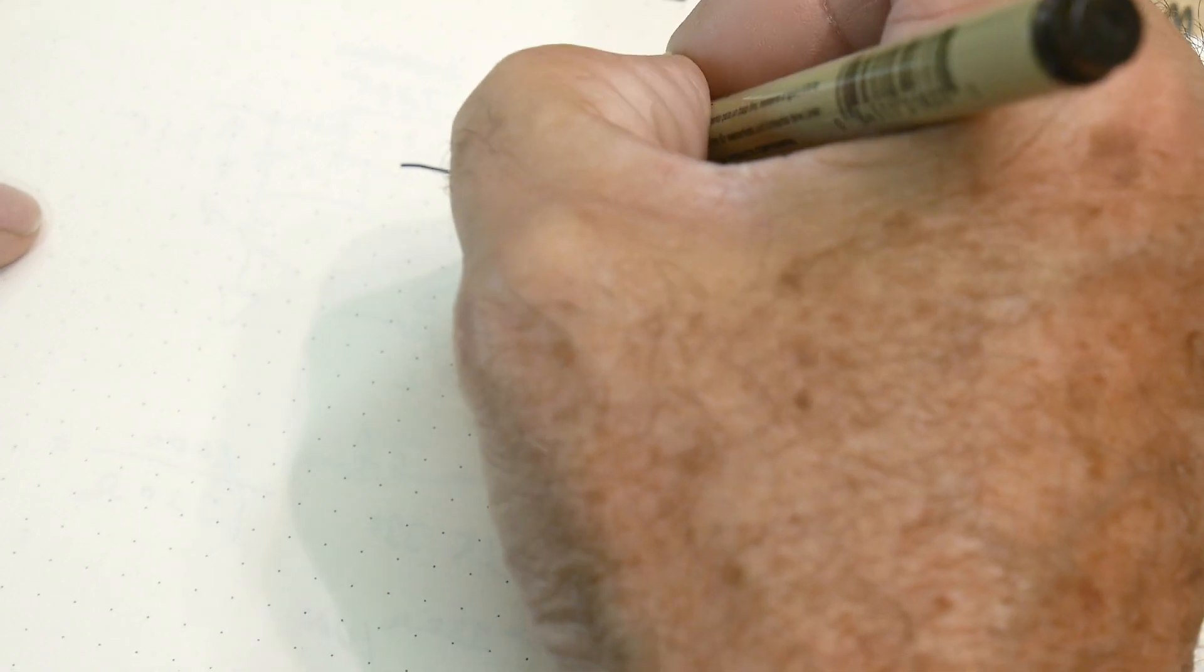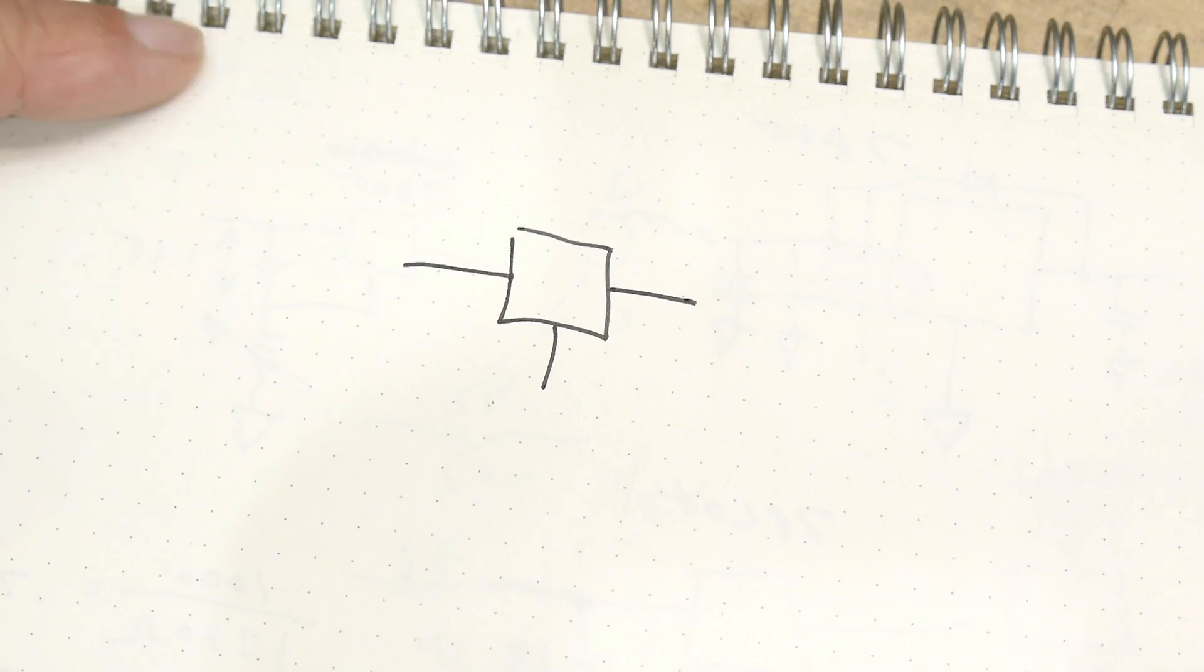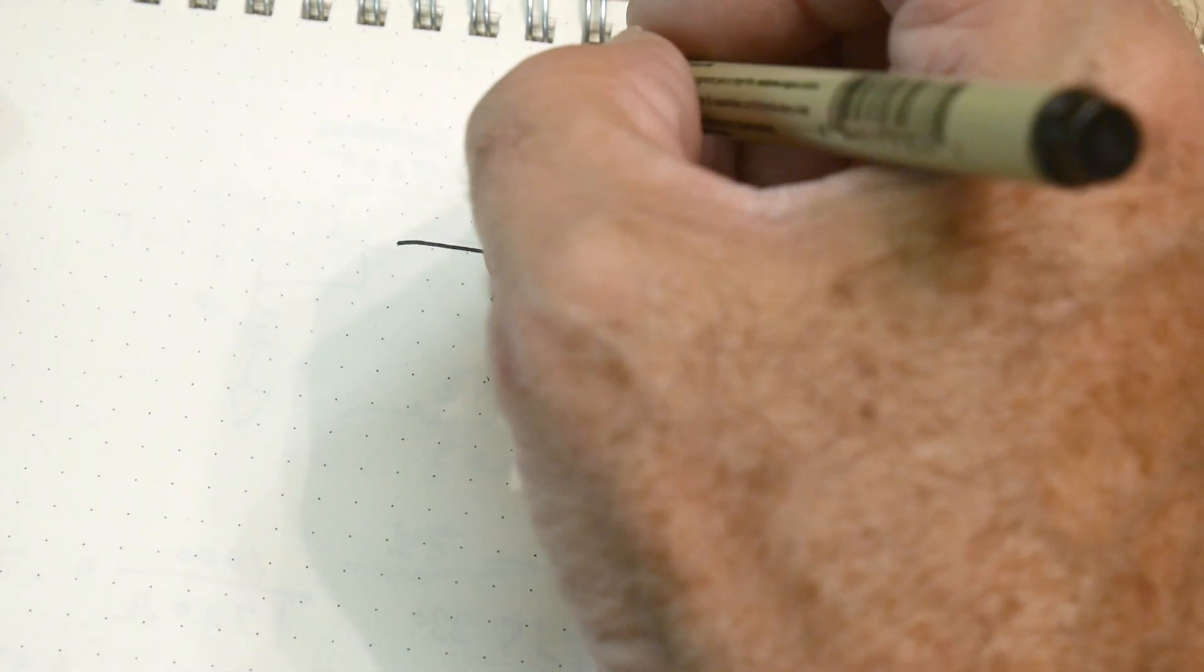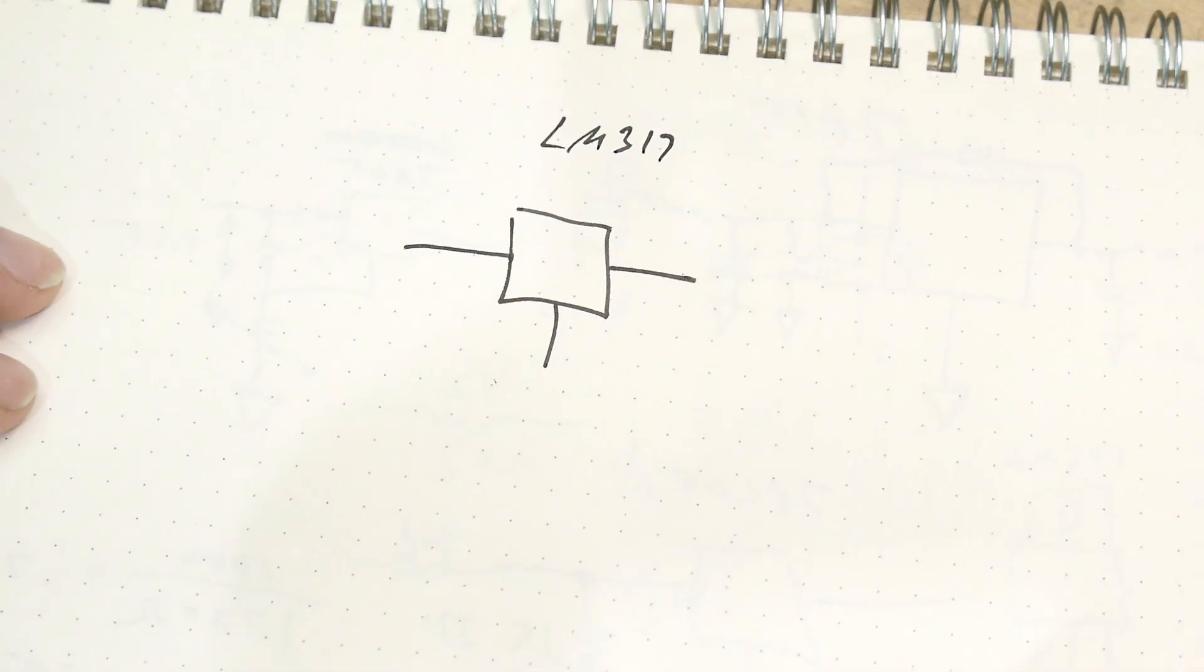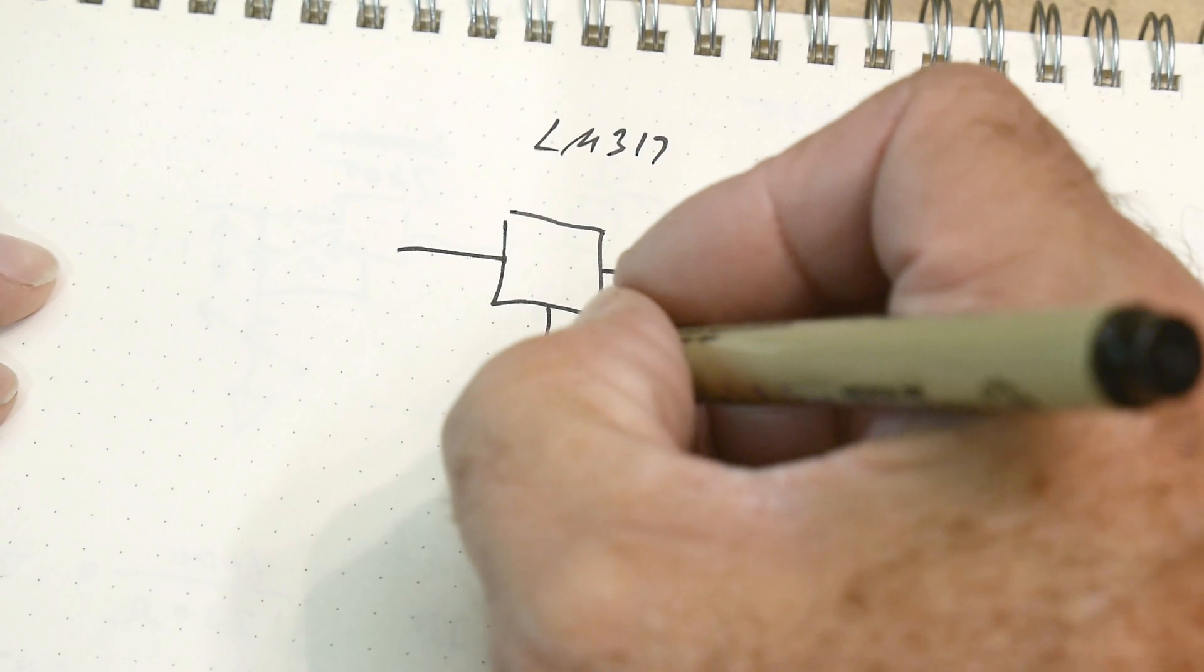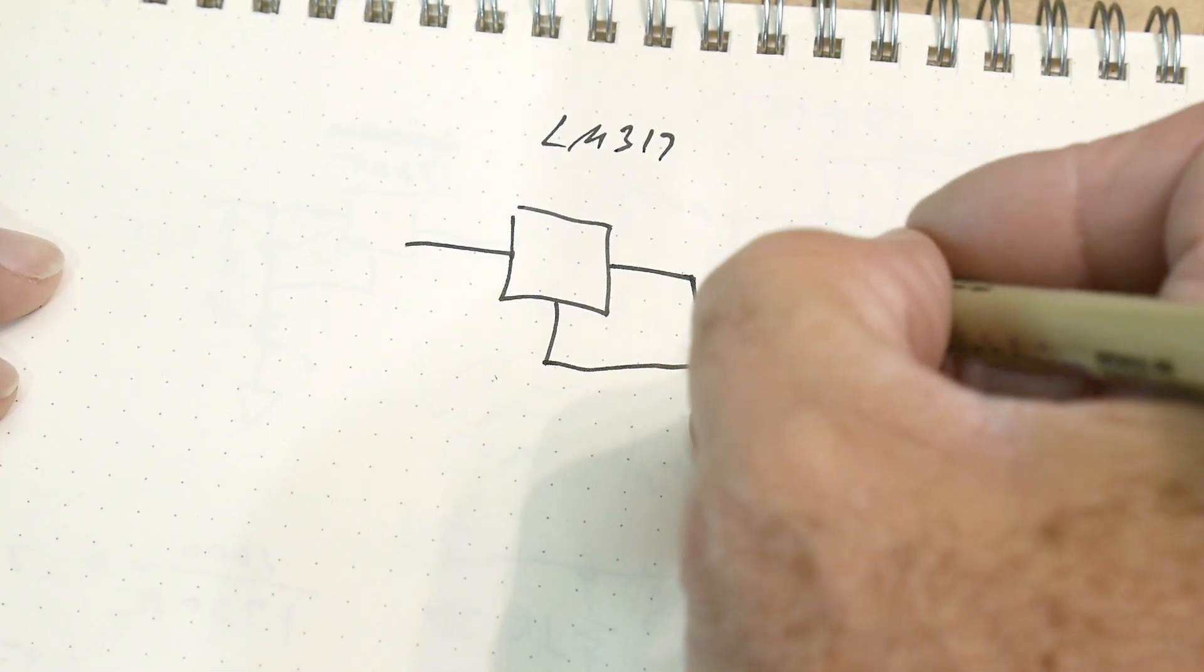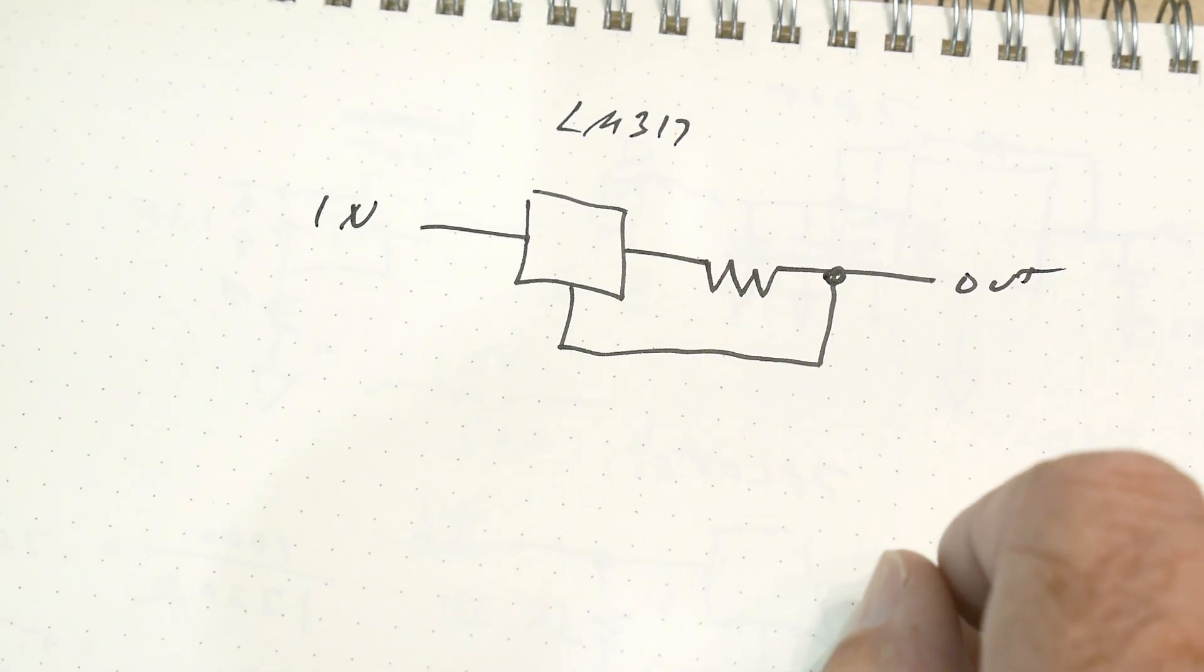All right. So we're going to use a three terminal regulator in a different way. Same regulator. We're going to use a LM317 and we're going to put a resistor here and we're going to do this. So in and out.